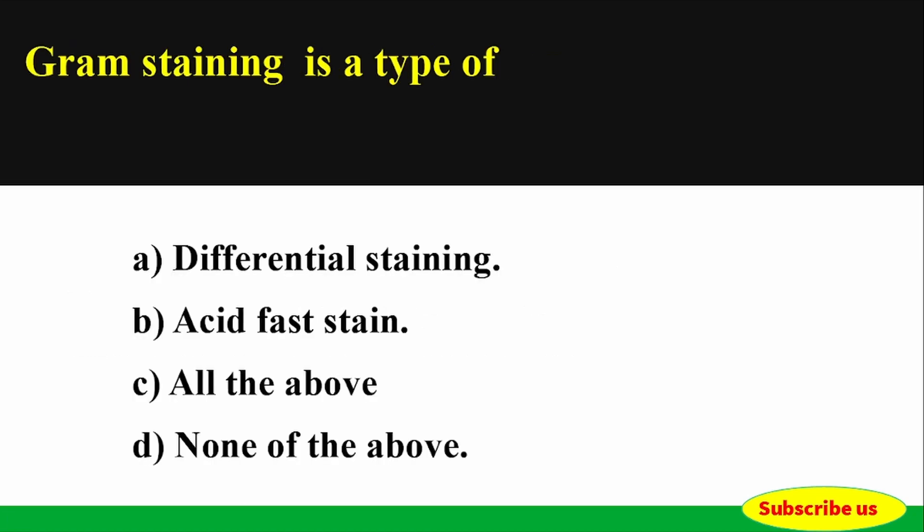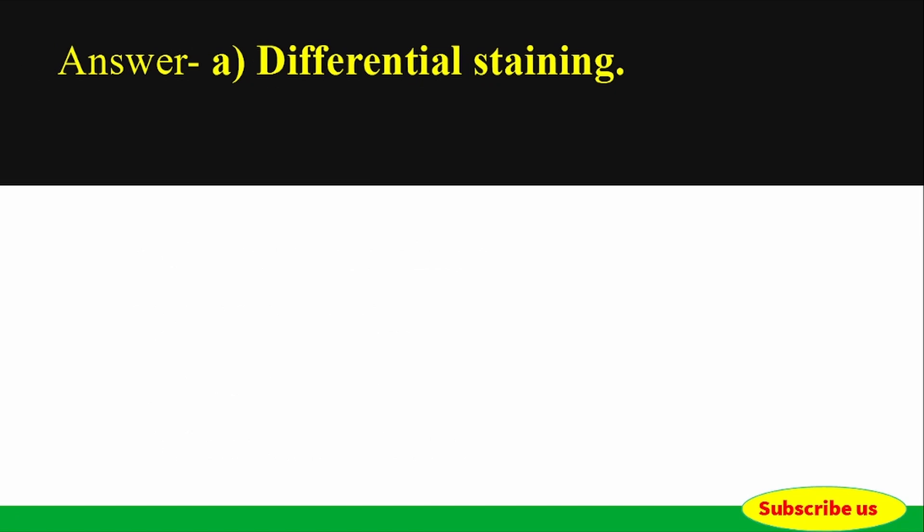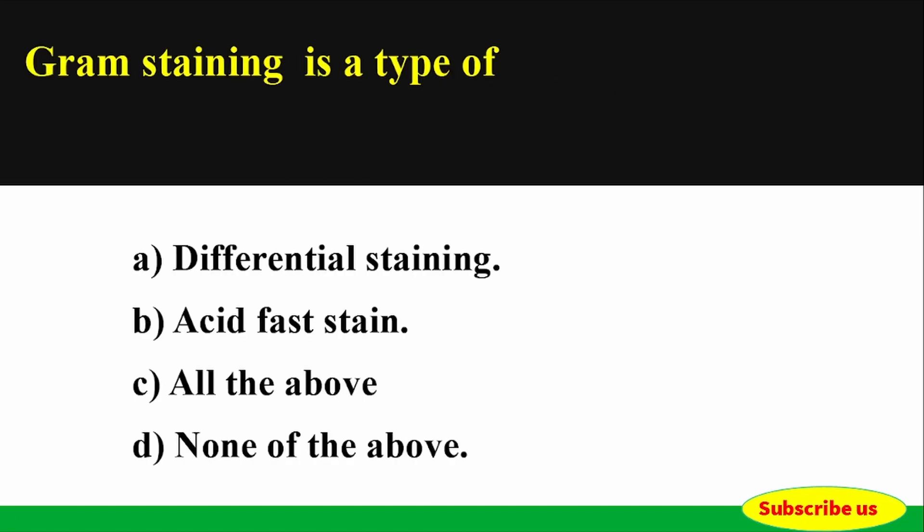Question: Gram staining is a type of — Options: A) Differential staining, B) Acid fast stain, C) All the above, D) None of the above. Correct answer: Option A — Differential staining. Gram staining is a type of differential staining.